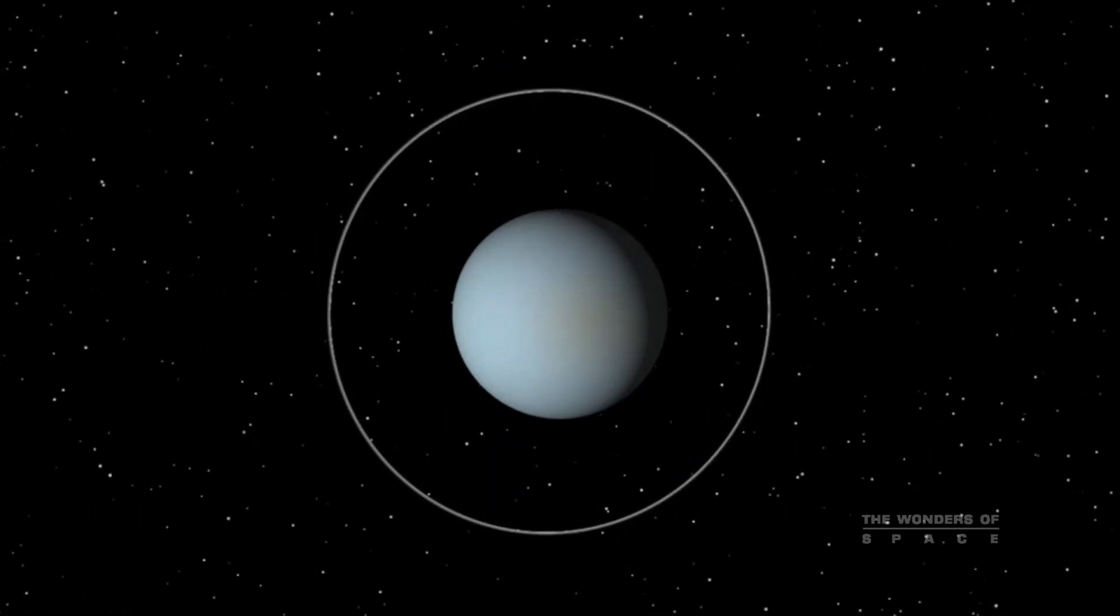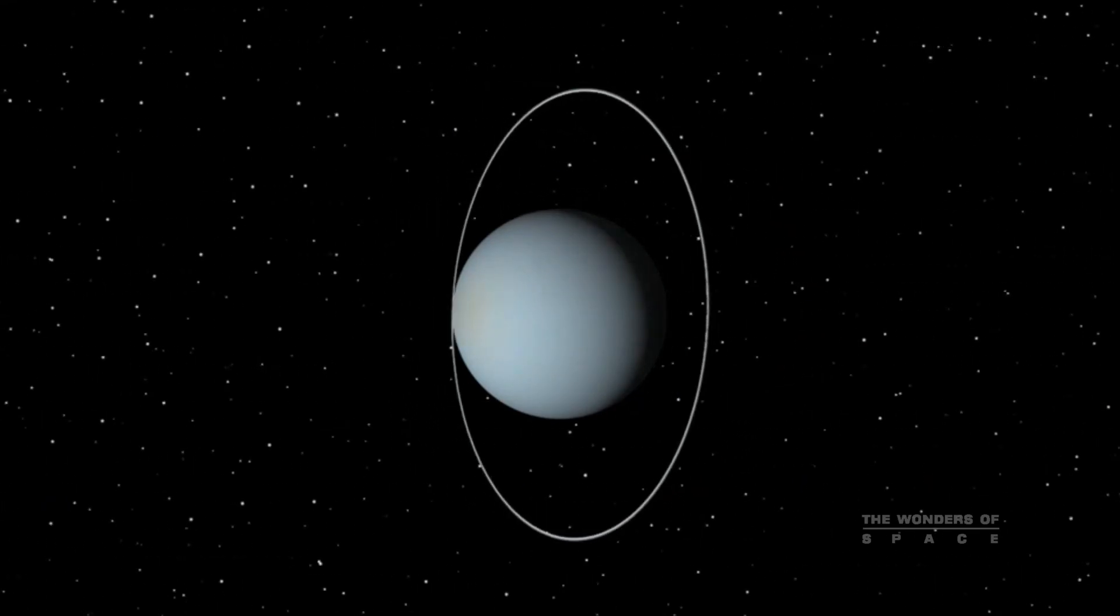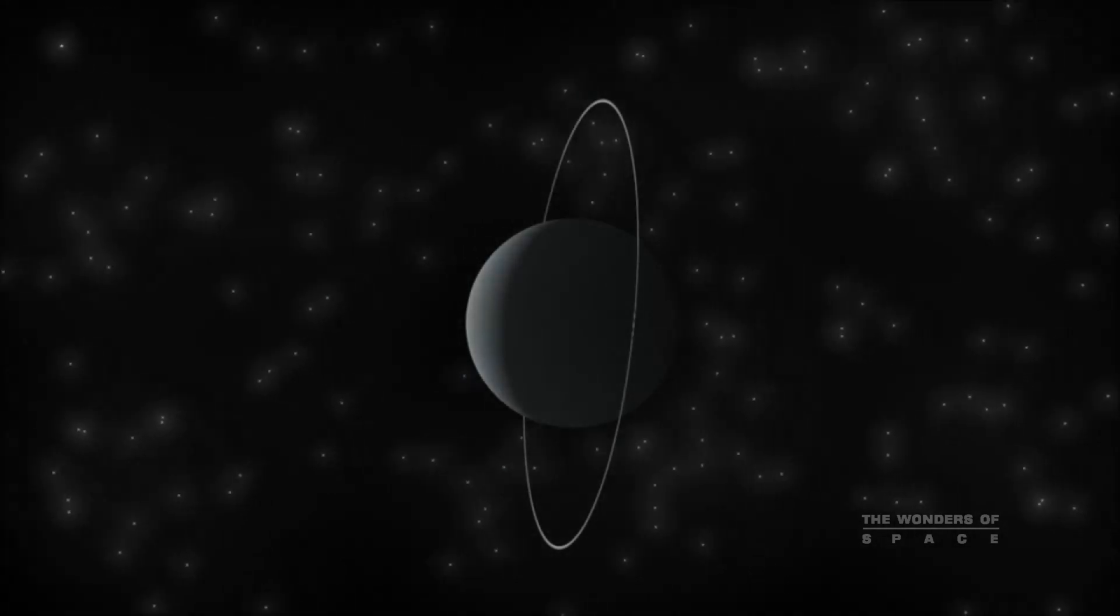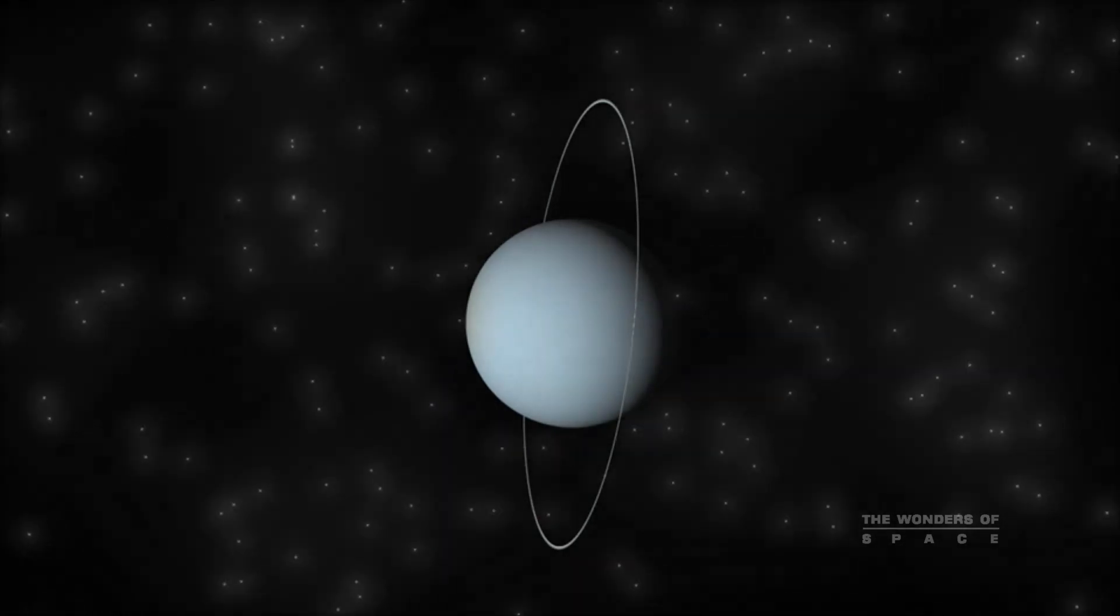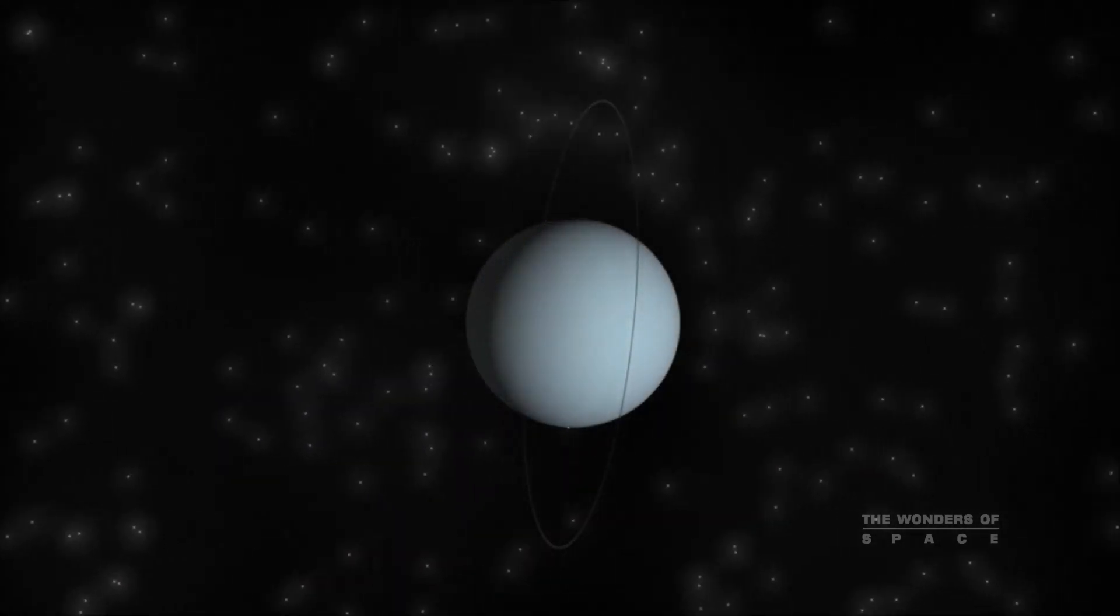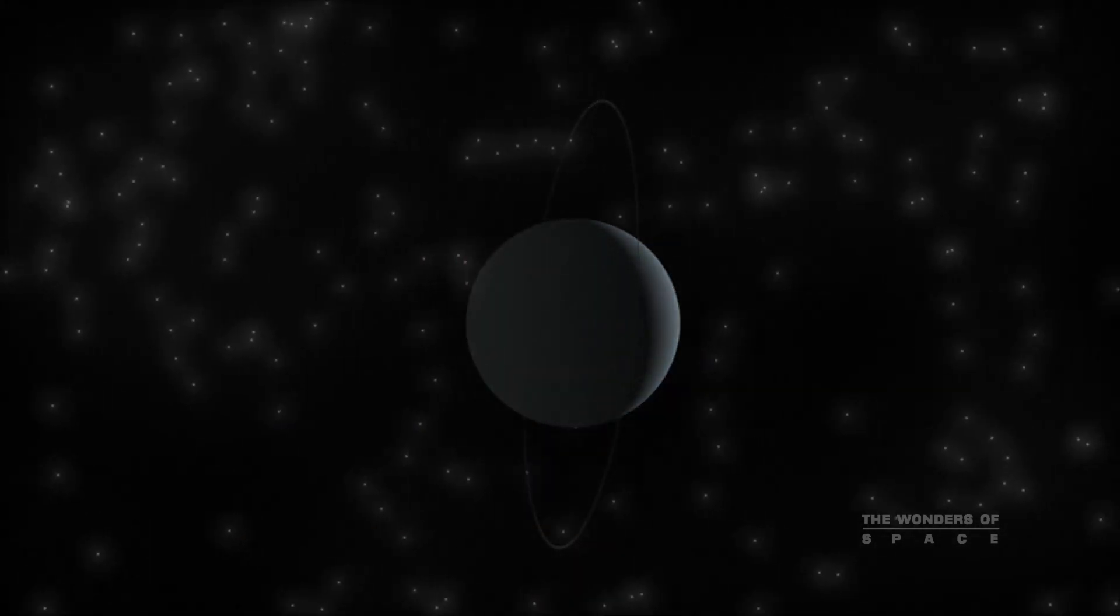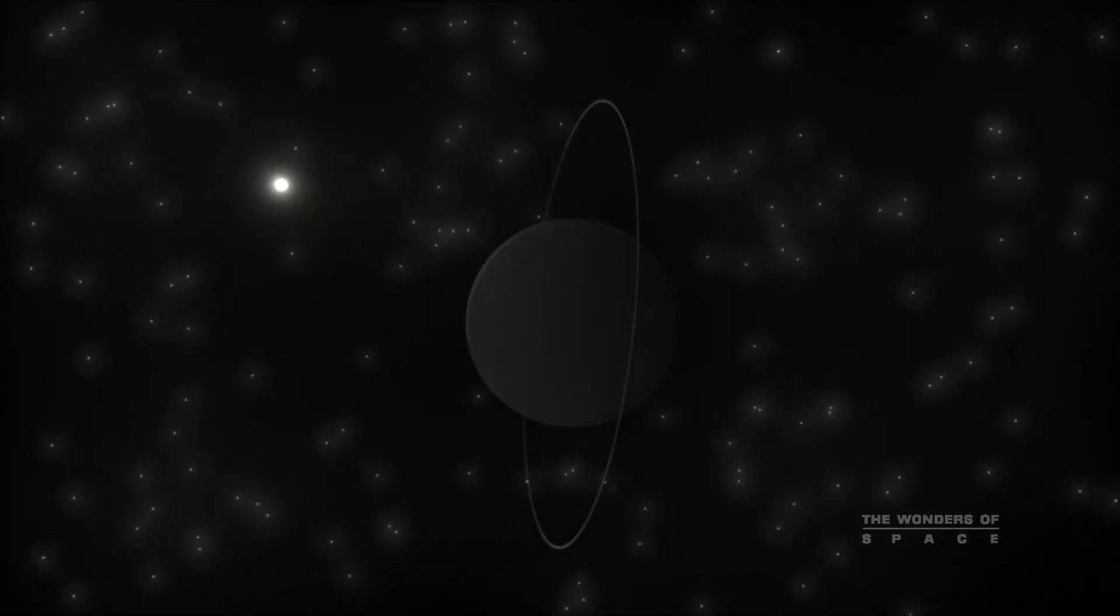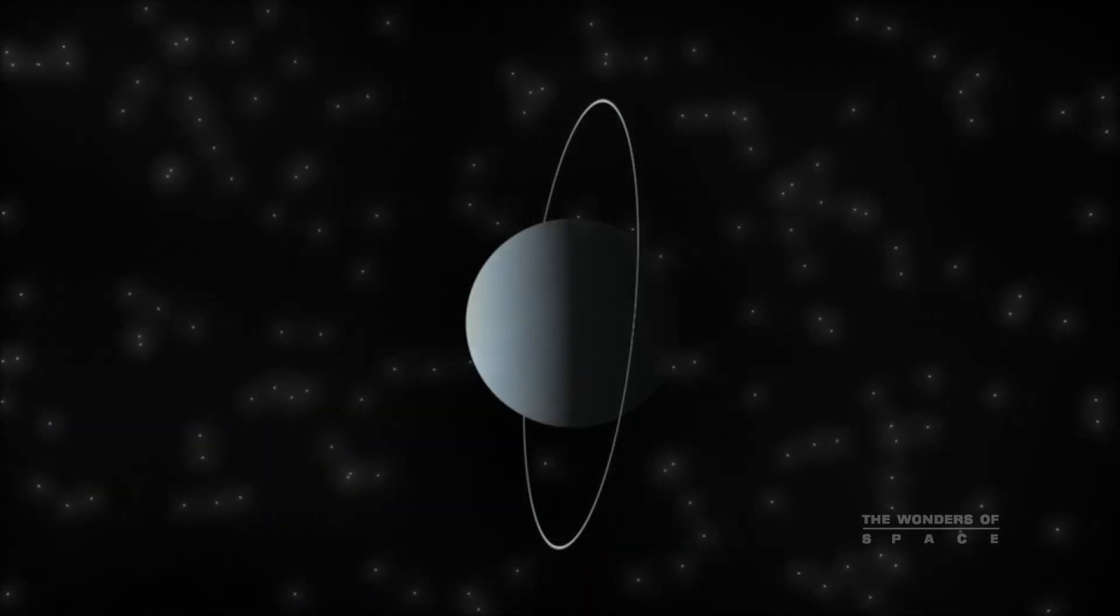Because of its extreme axial tilt, seasons on Uranus are worth a look. At the time near the solstice, one pole continually faces the Sun, while the other faces away. Only a narrow strip near the equator experiences Uranus' 17-hour day. At the other side of Uranus' orbit, the orientation of the poles is reversed. So each pole gets 42 years of continuous day, followed by a 42-year night.